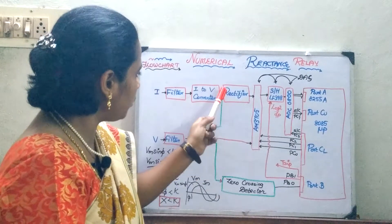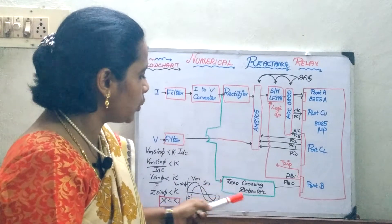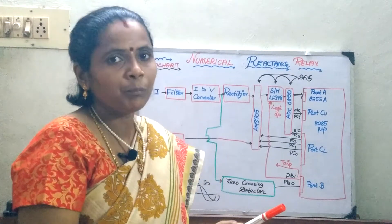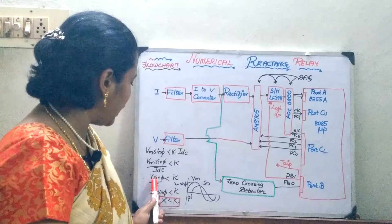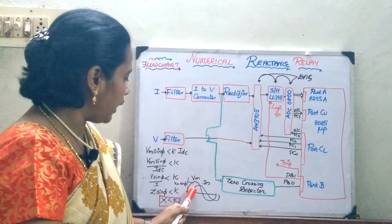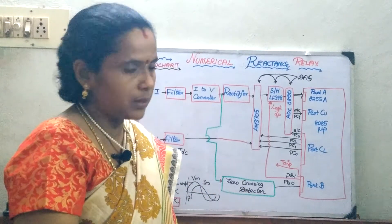So, you have to measure this Vm sine phi when the current has reached zero. So, you are using a zero crossing detector. Thus if I am going to measure the value of my instantaneous value whenever the current reaches zero, I can compute the reactance.